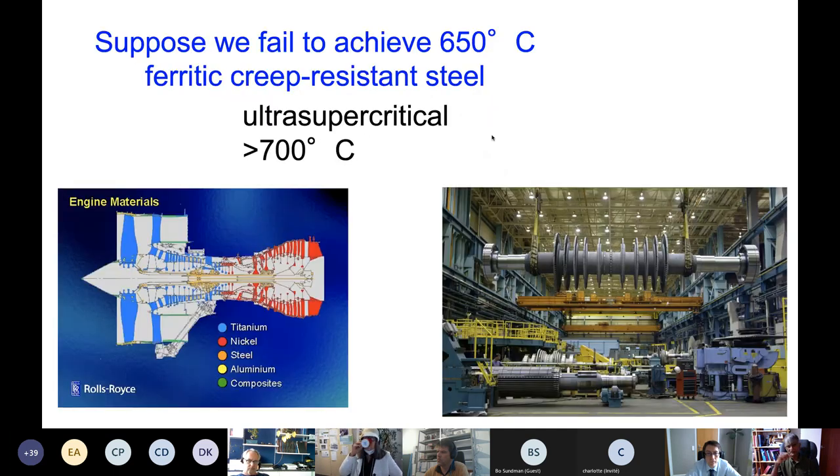So this is a very common problem. Bo Sandman has already talked about it a little, that we need to produce metals which can operate at temperatures in excess of 700 degrees centigrade under steam pressures of something like 30 megapascals for steam power plants.